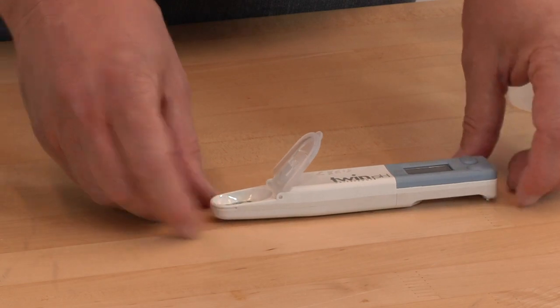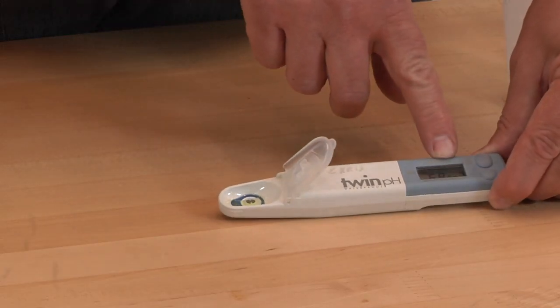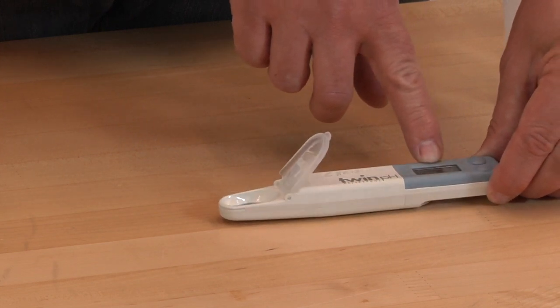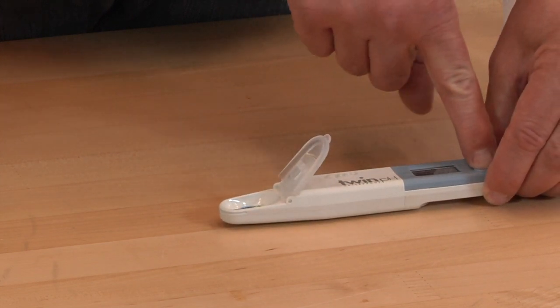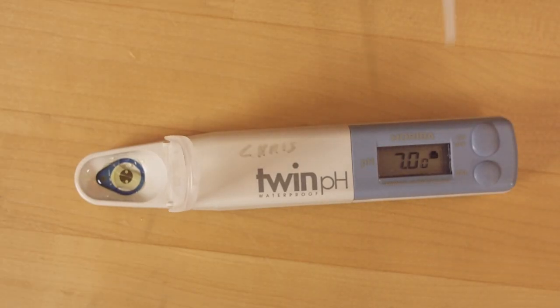So again, when we get a happy face, you can see that we're at 6.99. We want to calibrate to this, so we push the calibrate button. You can see we're calibrating to 7.00, and we have that little symbol showing we're in calibration mode. Now we just wait for the happy face, and we've done our calibration to pH 7.